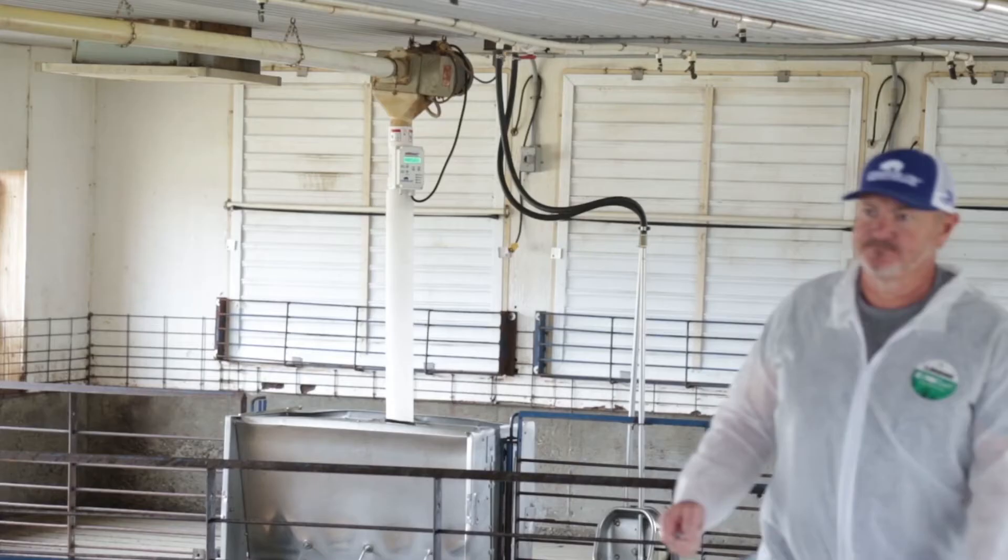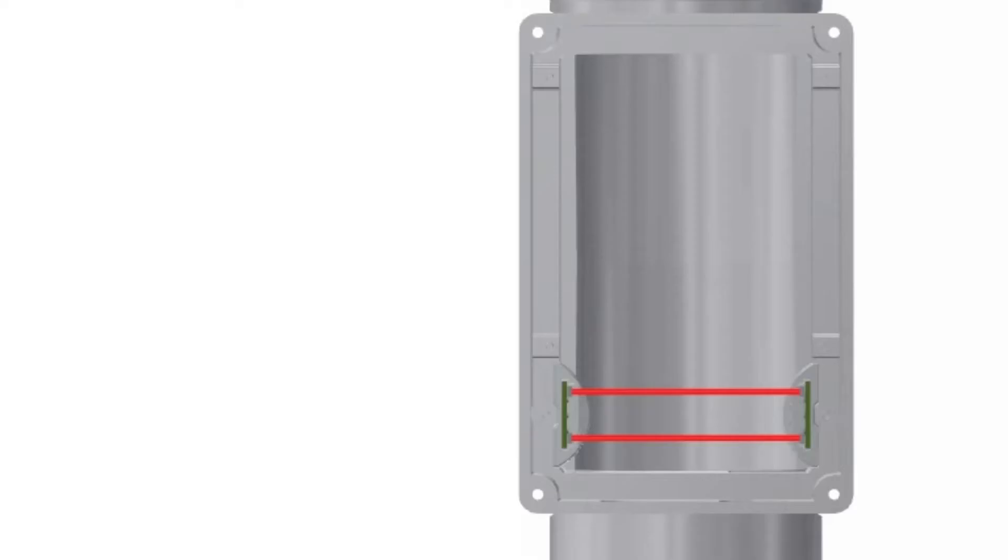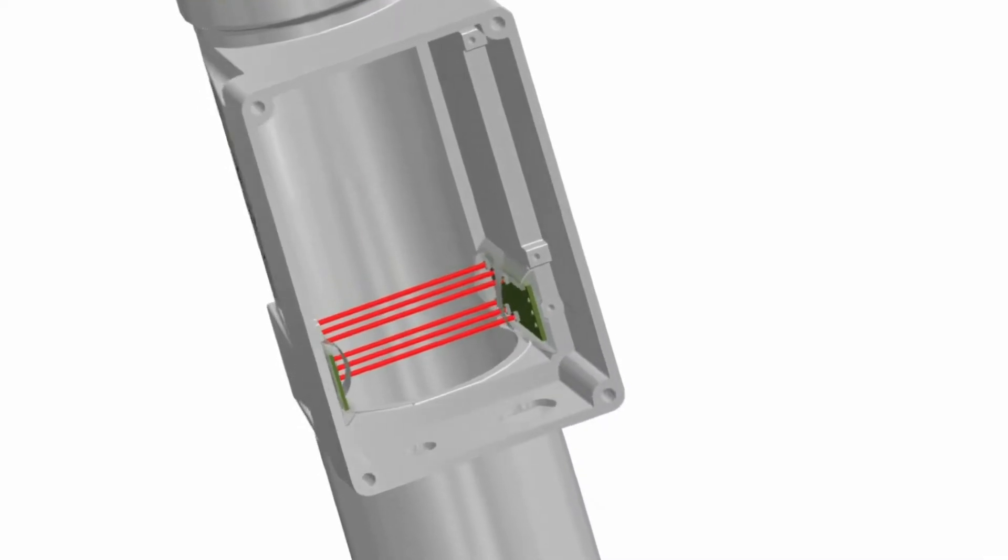This color-coded display permits a person to see what's happening from a distance without having to enter the pen. The infrared sensors can detect all types of feed and are not impacted by moisture the way proximity sensors are.